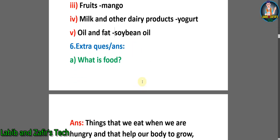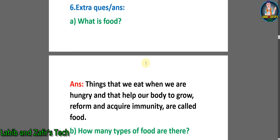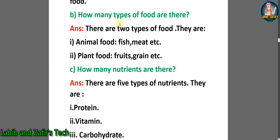Now let's go through some extra question answers. Number 1. A: What is food? Answer: Things that we eat when we are hungry and that help our body to grow, reform and acquire immunity are called food. B: How many types of food are there? Answer: There are 2 types of food — 1. Animal food: fish, meat, etc.; 2. Plant food: fruits, grain, etc.